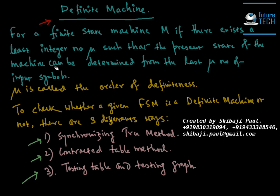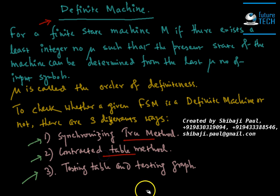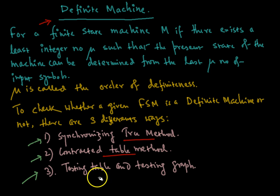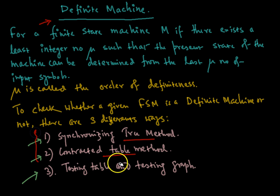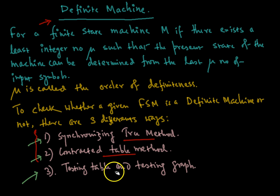To check whether a given finite state machine is a definite machine or not, there are three different ways: number one is the synchronizing tree method, number two is the contracted table method, and number three is by using a testing table and testing graph. In this tutorial, I'm going to show you how to check definiteness using the synchronizing tree and the contracted table method. In the next tutorial, I'll show you the testing table and testing graph method.